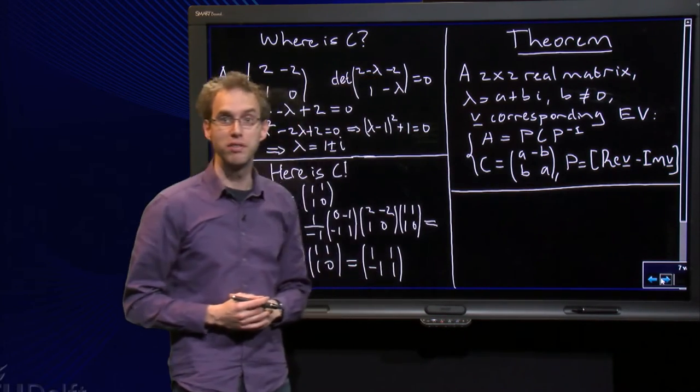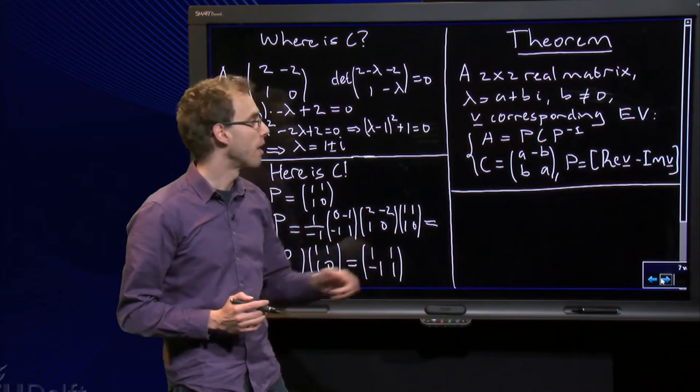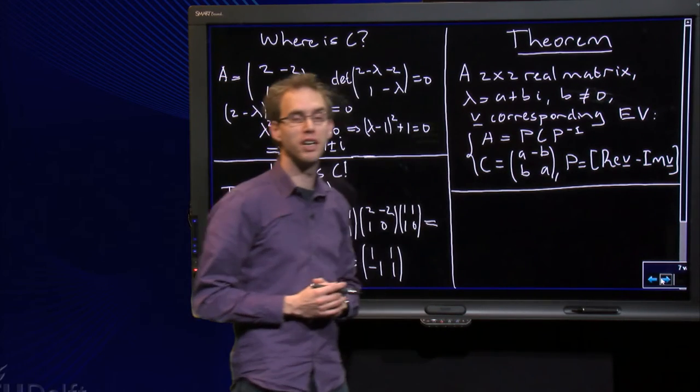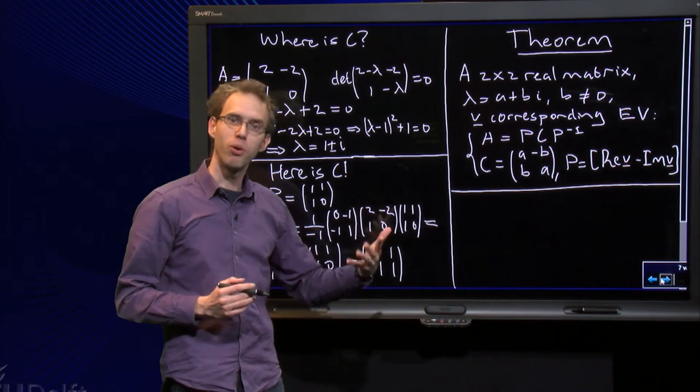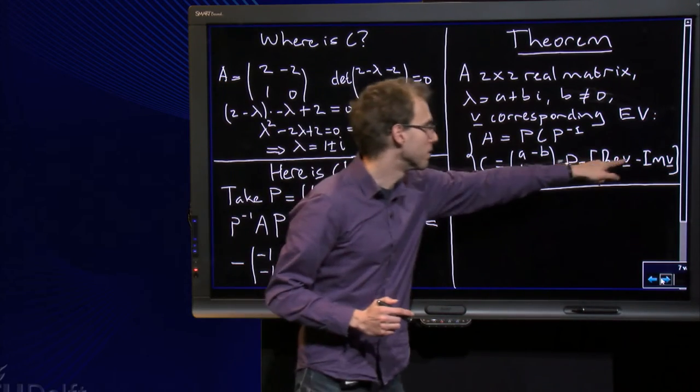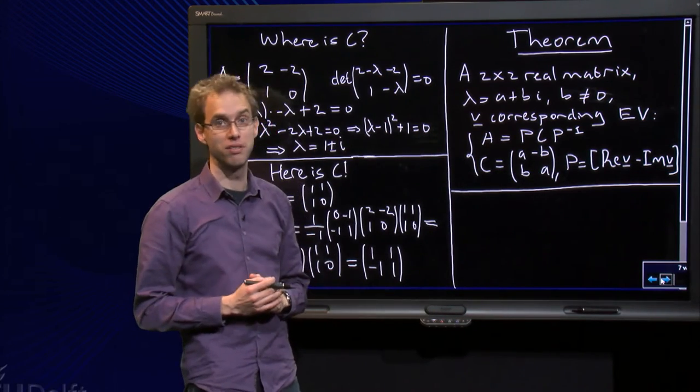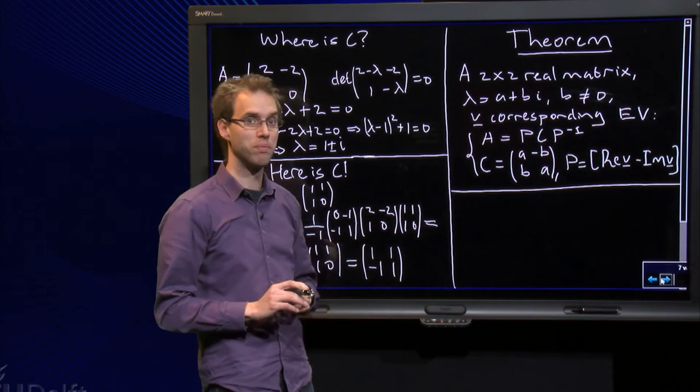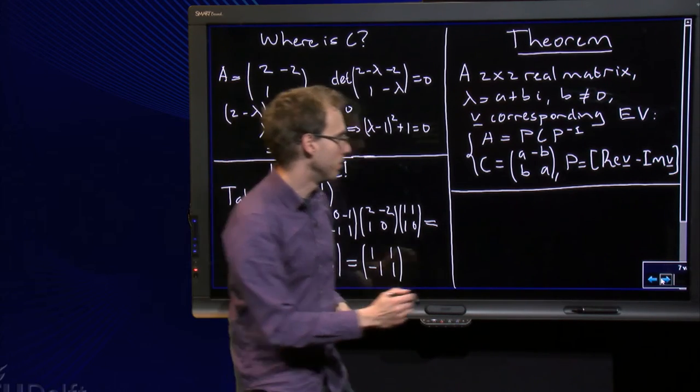And the P can be built using the eigenvector V. You have to put the real part of V in the first column of P, and you have to put minus the imaginary part of V - that's a bit odd, but you have to put minus the imaginary part of V in the second column.